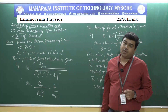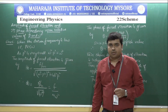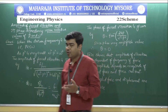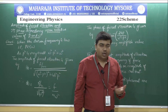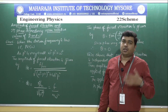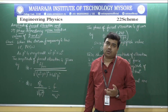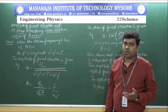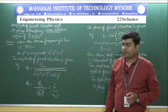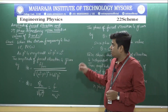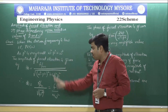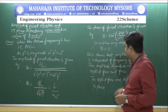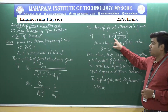As we have seen in the previous session, we derived the amplitude equation as well as the phase equation for forced oscillations. The amplitude of forced oscillation is given by F/m divided by the square root of (omega squared minus p squared) squared plus 4b squared p squared.